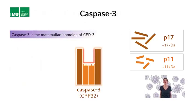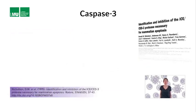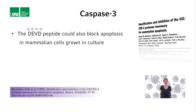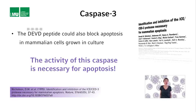These two proteins turned out to be the two subunits of another caspase, initially referred to as CPP32 and now referred to as caspase-3. Caspase-3 turns out to be the actual CED-3 homolog in mammals. Like CED-3 and ICE, caspase-3 is formed as an inactive zymogen or procaspase, and the fully active enzyme is generated through proteolytic cleavage. The identification of caspase-3 was published in 1995 in the journal Nature. One additional important finding reported in this publication was that the DEVD peptide, which blocked the ability of caspase-3 to cleave PARP in vitro, could also block apoptosis in mammalian cells grown in culture — demonstrating that the activity of this caspase is necessary for apoptosis.